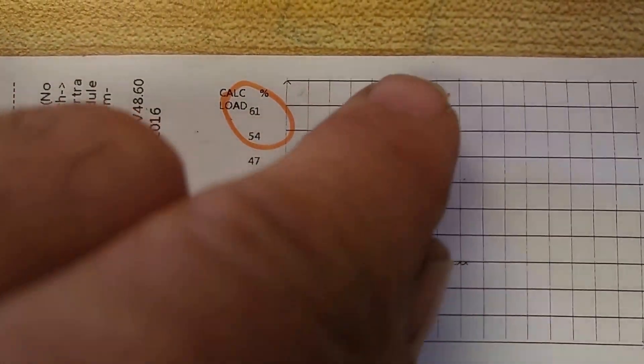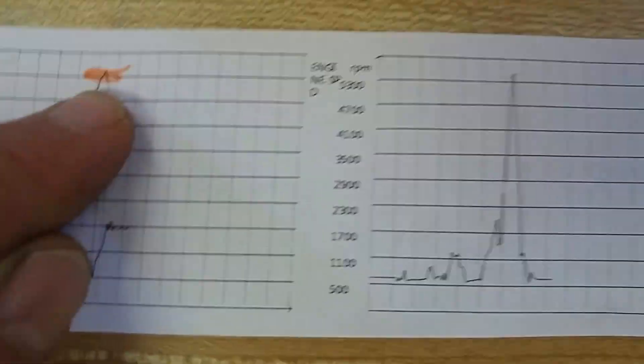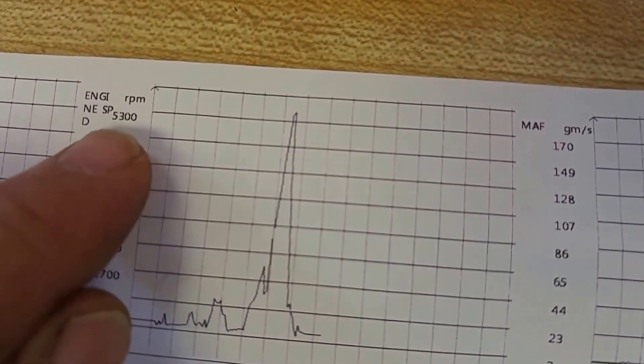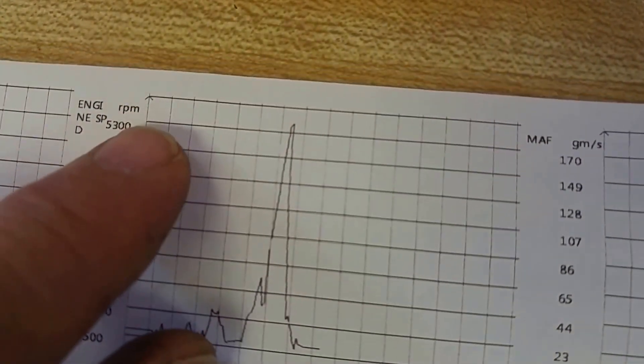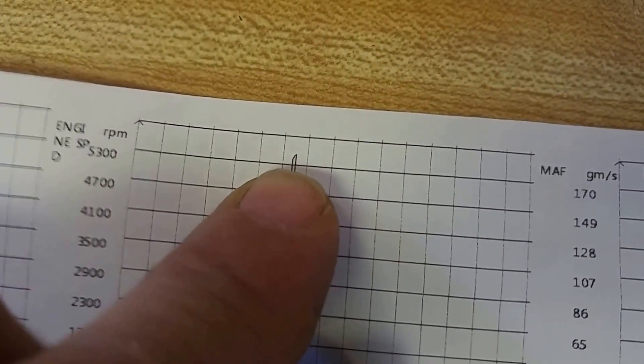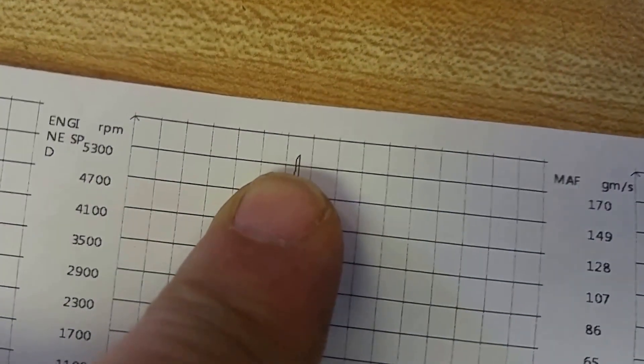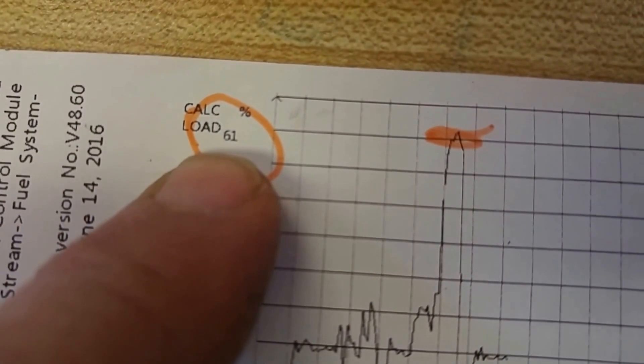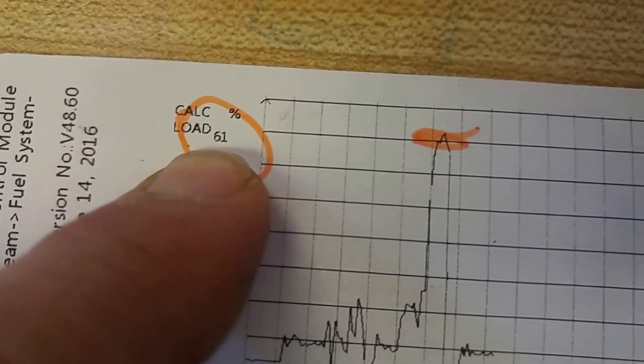The best this car would do was 61 percent. And you can see, here we go, this is where I hit it. I went to accelerate. If we look at the next, here's engine RPM. I was at 5,700 RPM or 5,300 RPM, a little bit over that 5,700 RPM. This thing was screaming. The most it would report was 61 percent.